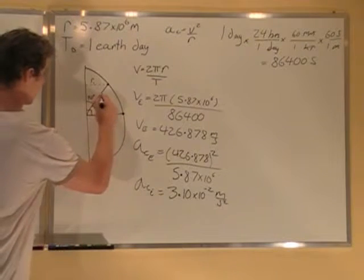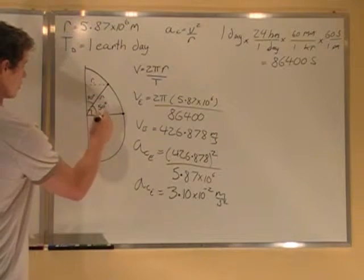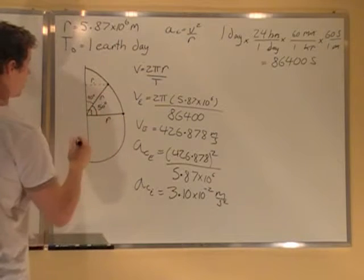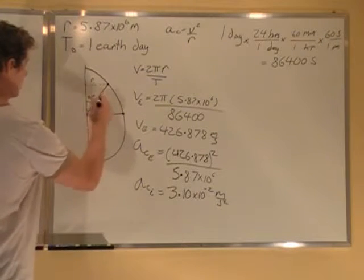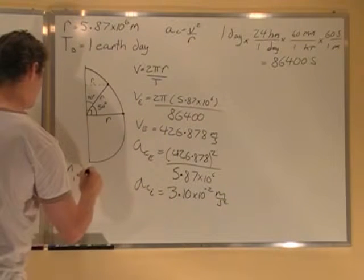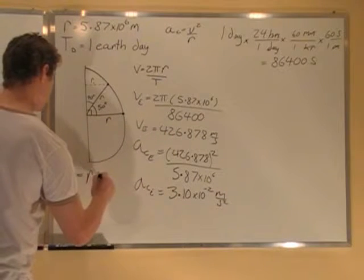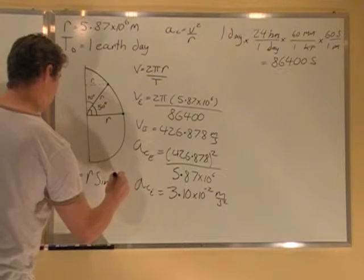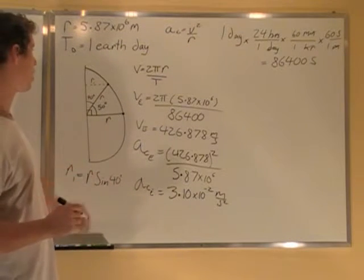So this is r, right, because this is a sphere. So if it's r here, it's r here. And we know that sine 40 is going to be opposite over hypotenuse. So r1 equals r sine 40 degrees. So that's what we have to use for r1.